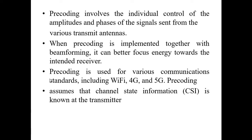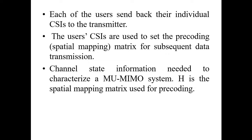With the use of pre-coding in the wireless communication scenario — mostly in Wi-Fi, 4G, and 5G — we need to consider channel state information from the transmitter's point of view. Once the transmitter knows the channel state information, it becomes quite comfortable to process the data so that the receiving side can process the signal in the best way possible. Each of the users sends back their individual channel state information to the transmitter, and based on the number of users and their situation, the CSI is used to set the pre-coding concept based on spatial multiplexing, put into mathematical form using weighting matrices. The channel state information is needed to characterize the multi-user MIMO.